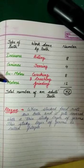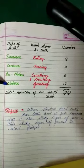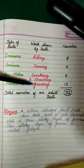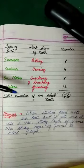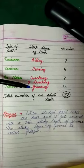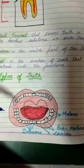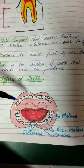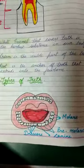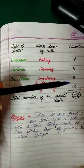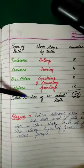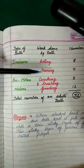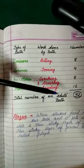Next are the molars, which are the last teeth including the wisdom teeth. These are used for grinding food into small pieces. Molars are 12 in total: 3 on each side, upper and lower. So altogether we have 8 incisors, 4 canines, 8 premolars, and 12 molars, making the total 32 teeth in an adult's mouth.